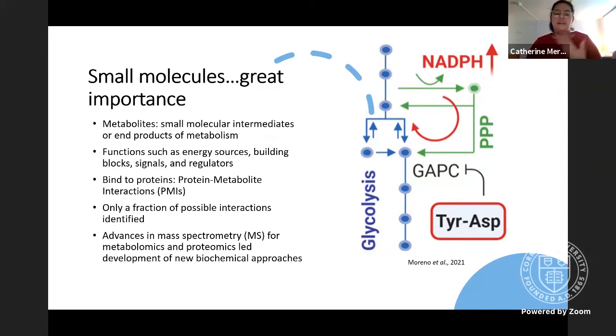Evidence shown in this image, we have of tyrosine asparagine inhibiting the function of GAPC, rerouting the metabolic process of glycolysis to reduce more NADPH. And although we know hundreds of PMIs, these only represent the tip of the iceberg. Advances in mass spectrometry-based metabolomics and proteomics have allowed for the development of many different biochemical approaches that are protein-wide or metabolome-wide to determine PMIs.